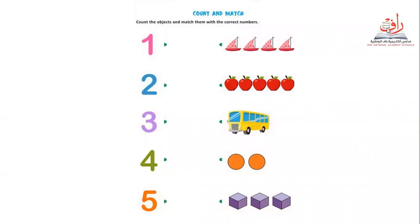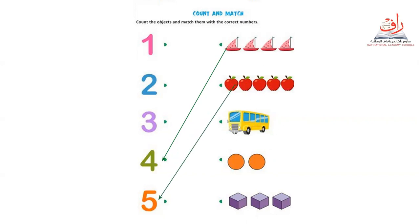Let's go to count and match — count the objects and match them with the correct numbers. Let's start from the boat: one, two, three, four — number four. Who can tell me where is number four? Here we go, well done! Let's count the apples: one, two, three, four, five — super, excellent! Let's go to the bus — how many? Only one, excellent! How many circles do we have? One, two — two circles. And the square? One, two, three — well done, super, amazing students!